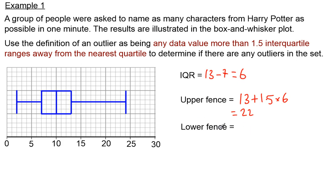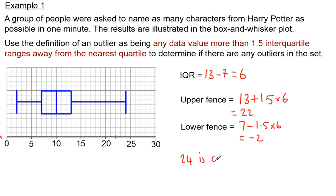Our lower fence is our lower quartile minus 1.5 times our IQR, so 7 minus 9, which equals negative 2. Our upper fence is 22 and our lower fence is negative 2. Marking these on the diagram, our lowest value of 2 is on the right side of the lower fence — so that's okay. But our highest value of 24 is beyond the upper fence of 22.